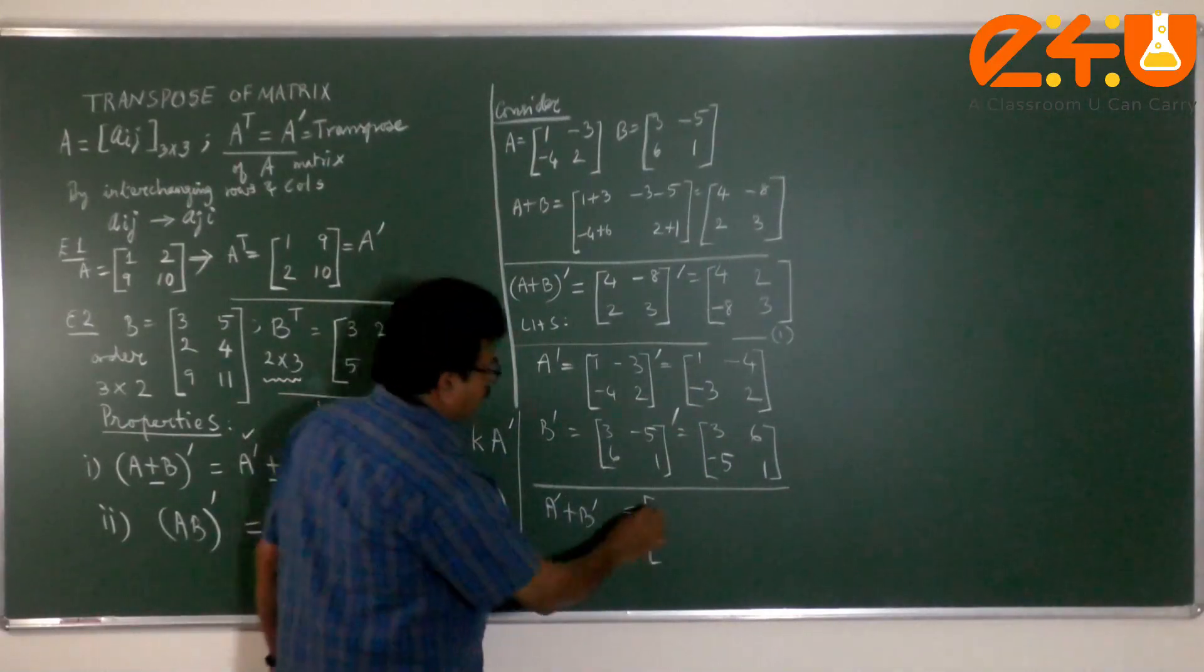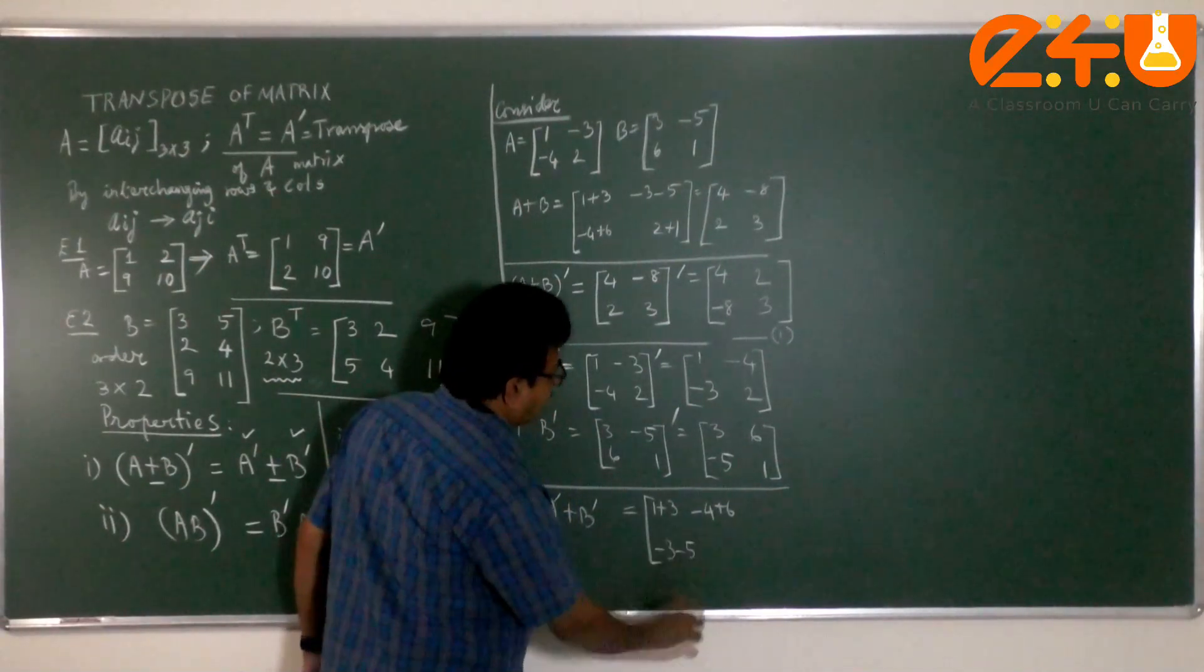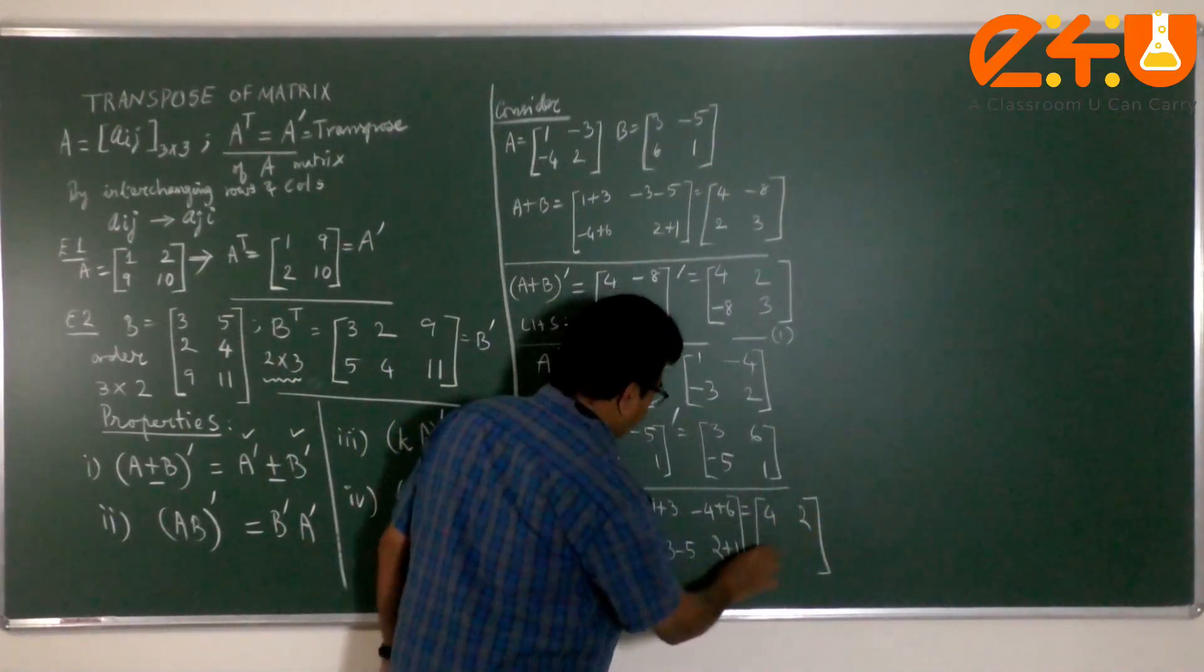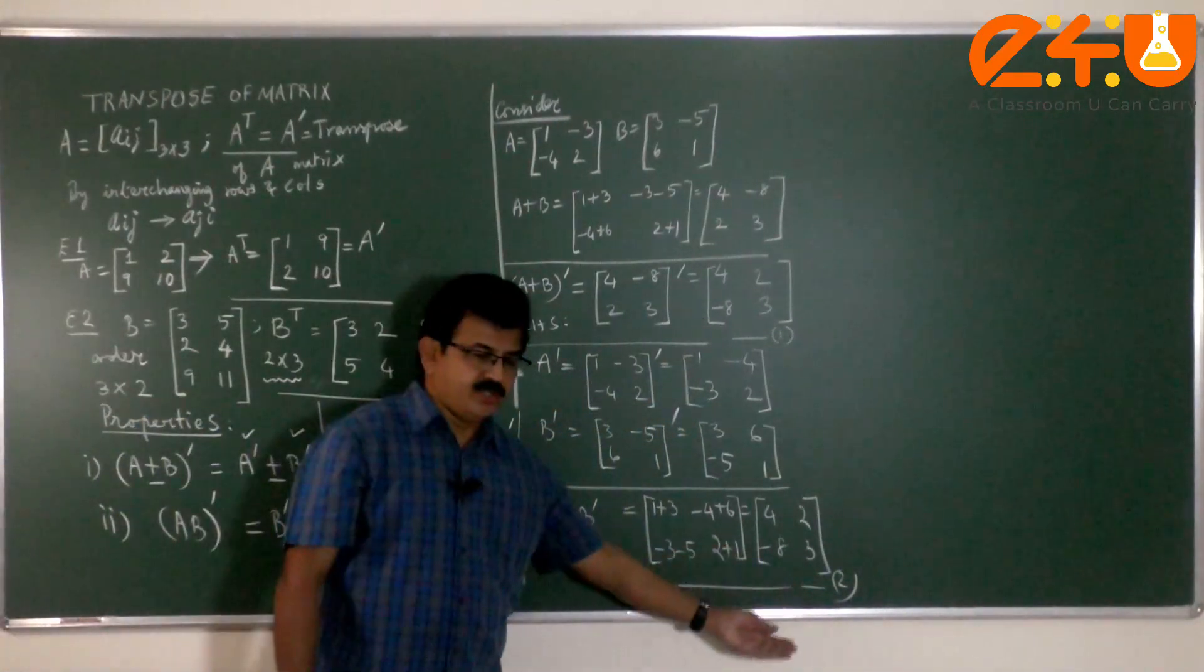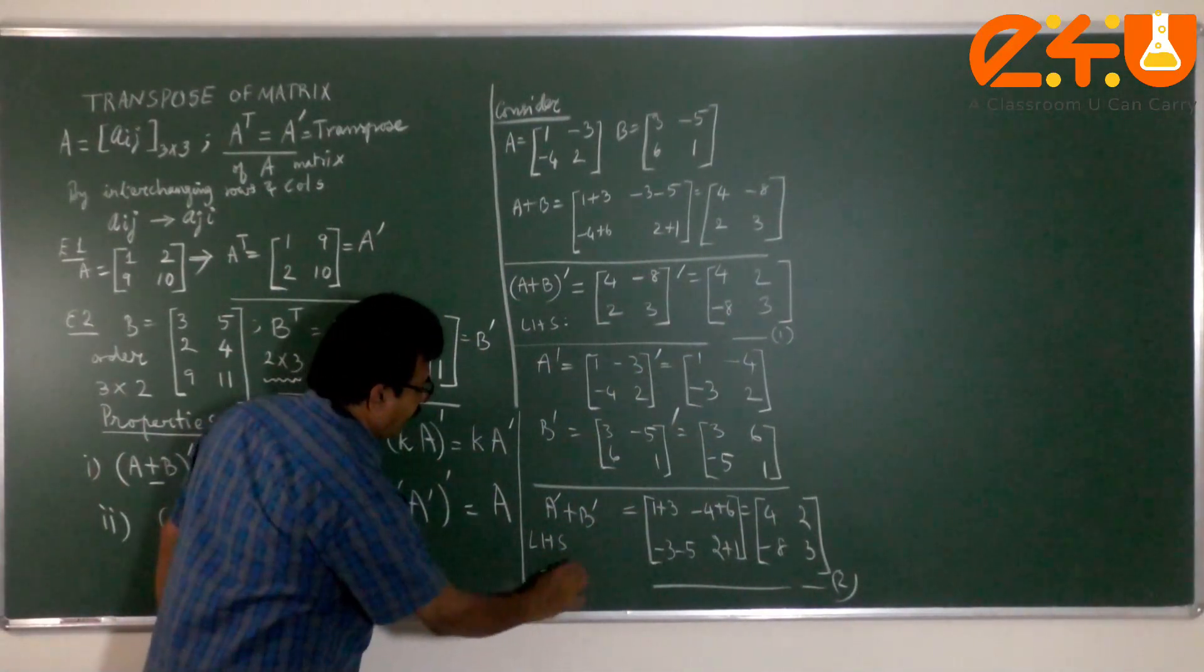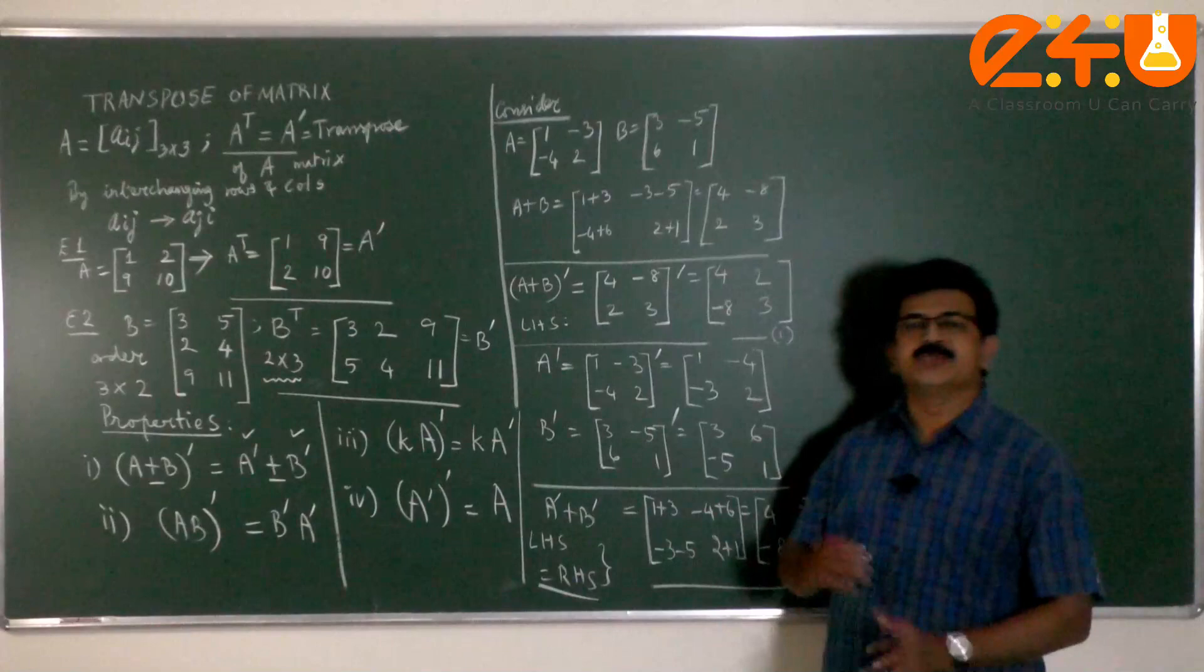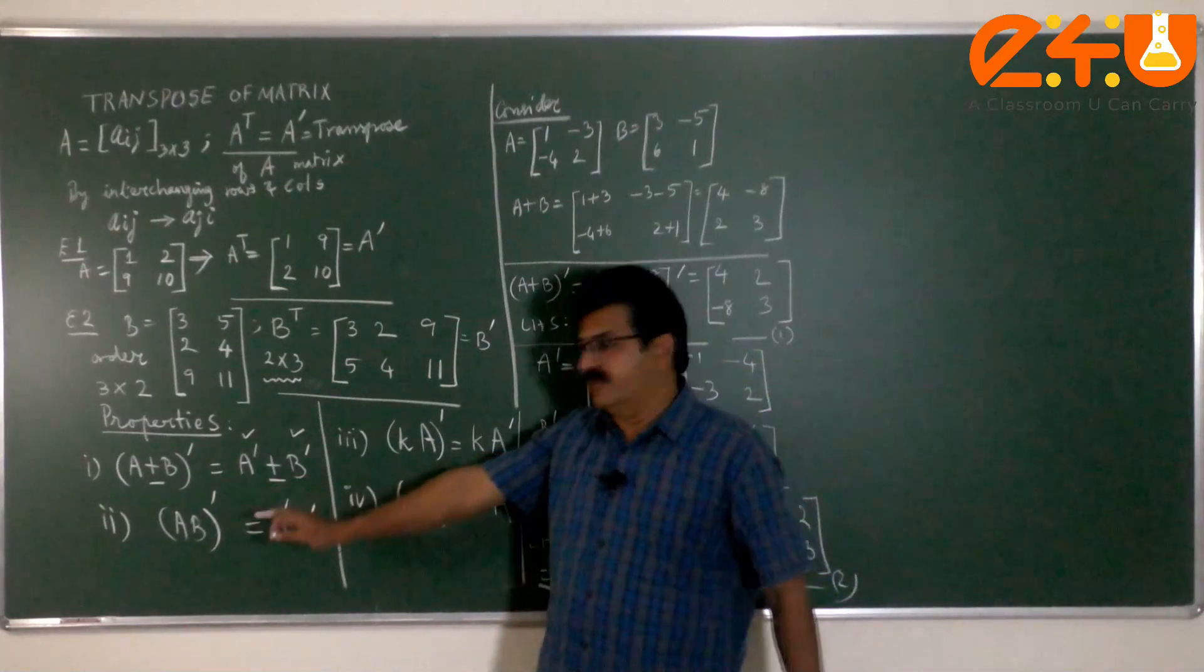What do we mean by add? Add the corresponding elements. It becomes 1 plus 3, minus 4 plus 6, negative 3, negative 5 and 2 plus 1. Now what is the result? You get 4, 2, minus 8 and 3. Compare this result 2 with result 1. We find exactly the left hand side and RHS are equal. And hence this property stands proved.